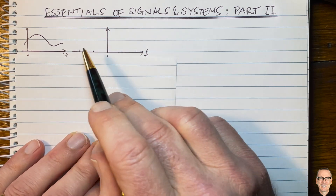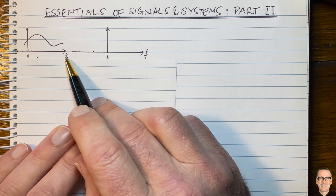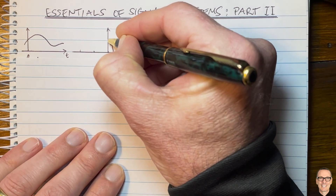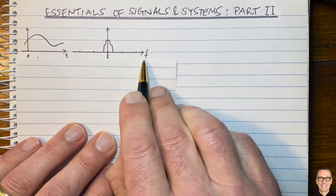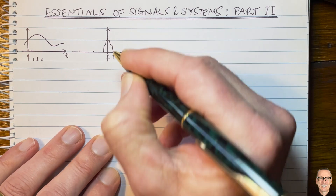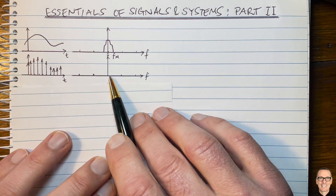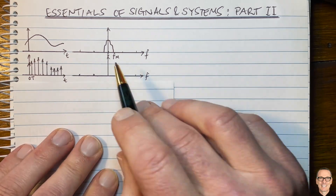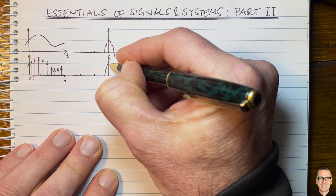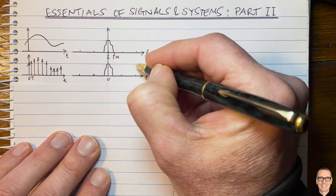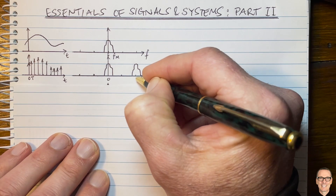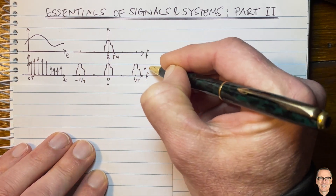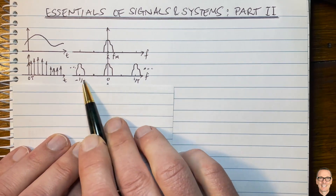Let's look at the essentials of sampling. Here we have a generic time domain function — a smooth function — so in the frequency domain it occupies the low frequency band, going between zero frequency and some maximum frequency, which we'll call fm. When you sample with a period of capital T, in the frequency domain you get your original representation but also copies appearing at the sampling frequency, one divided by T, and at negative one on T and multiples thereof. That's an essential thing to know about sampling.